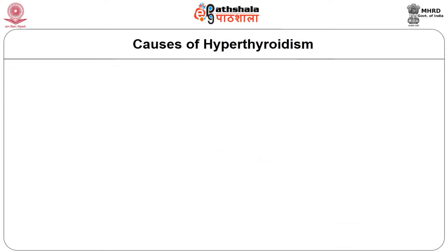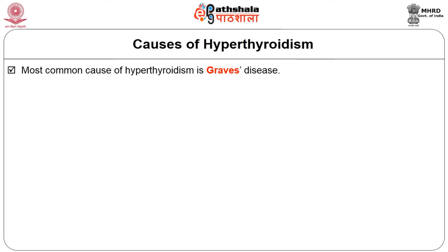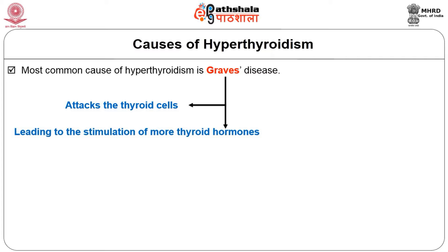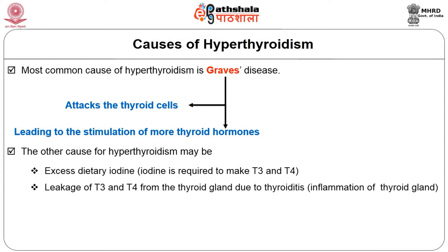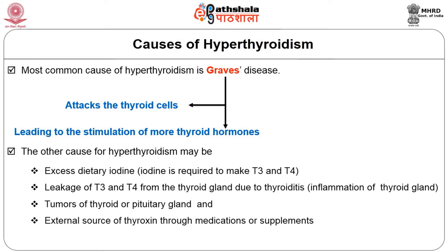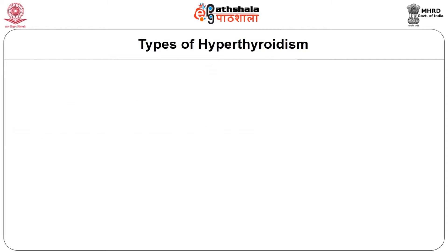The most common cause of hyperthyroidism is Graves disease, an autoimmune disease that attacks the thyroid cells, leading to stimulation of more thyroid hormones. Other causes of hyperthyroidism may include excess dietary iodine — the iodine required to make T3 and T4 — leakage of T3 and T4 from the thyroid gland due to thyroiditis (inflammation of the thyroid gland), tumors of the thyroid or pituitary gland, and excess sources of thyroxine through medications or supplements.